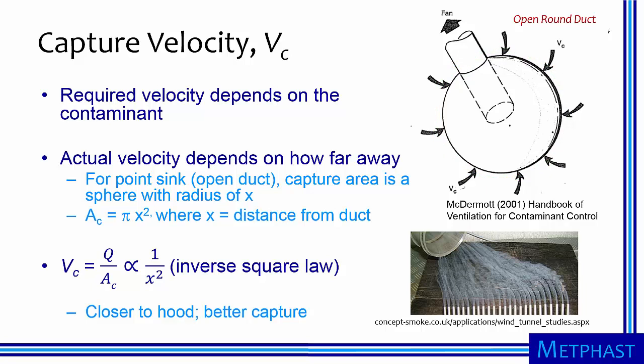The capture area can then be expressed as pi times x squared. Capture velocity is equal to the air flow divided by the capture area, which is dependent on distance squared. Thus, the capture velocity is related to 1 over distance squared, or the inverse square law. The bottom line is that capture velocities are high near the duct and rapidly diminish with distance away from the opening.